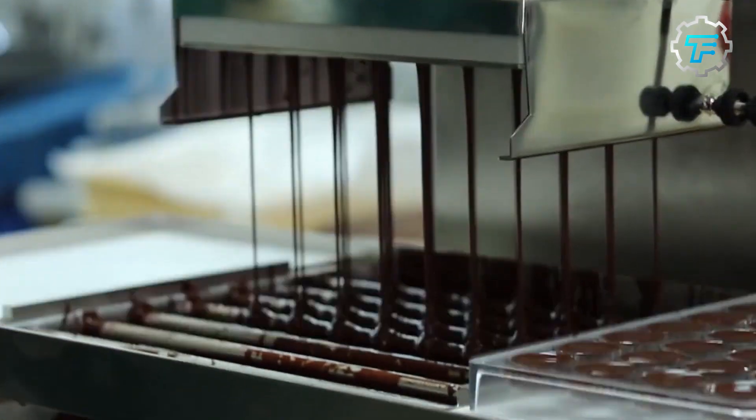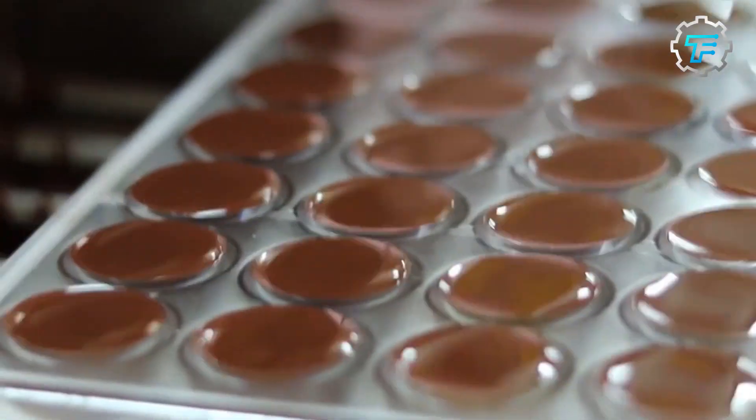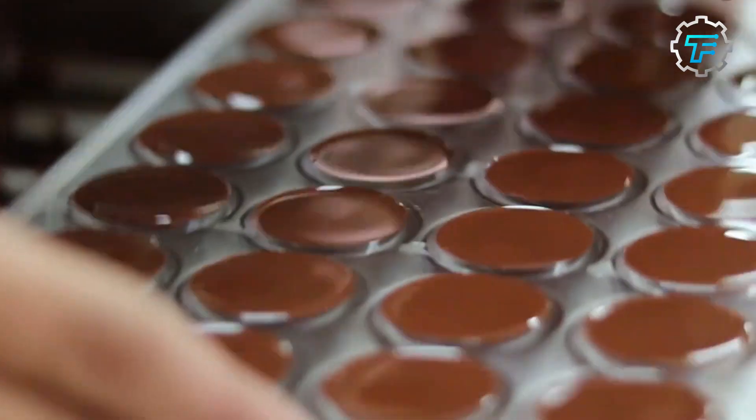Step 10, molding. As tempered chocolate flows out of the machine, it is poured into different shapes and sizes of molds.